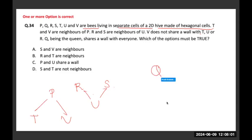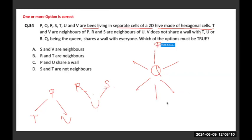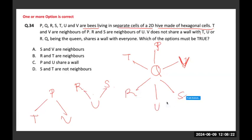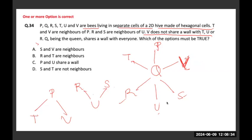When I place this orientation — P, T, V, U, R, and S — this last condition that V does not share a wall with T, U, and R is also getting satisfied, along with all the other conditions. Q is of course happening in the center. This is the correct arrangement of the beehive. I'll go option by option: S and V are neighbors — yes, they share a wall, so A is correct. R and T are neighbors and they share a wall — also correct. P and U share a wall — no, they are opposite to each other, so C is wrong. S and T are not neighbors because they are opposite — that is correct. So A, B, and D are all correct.